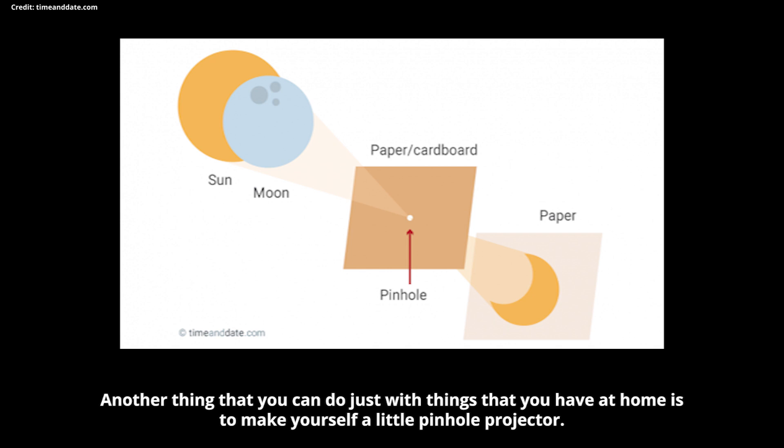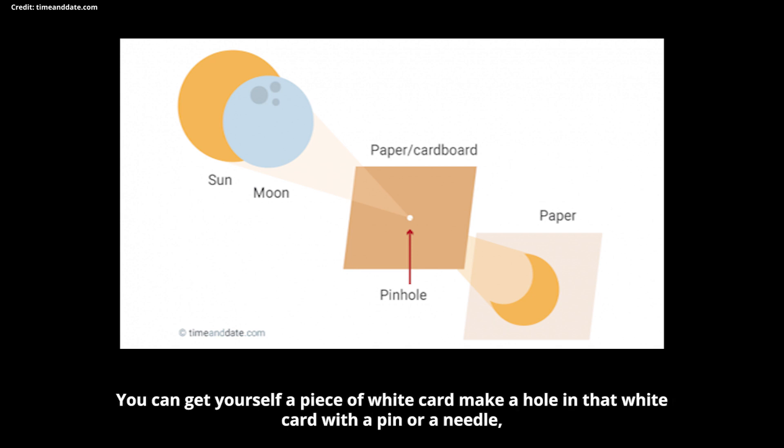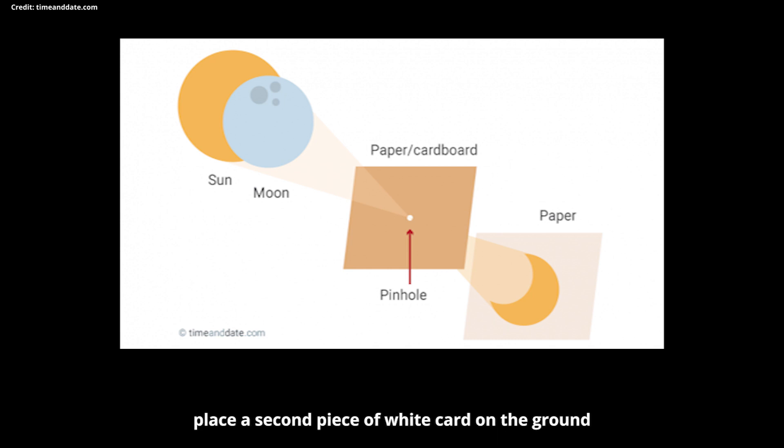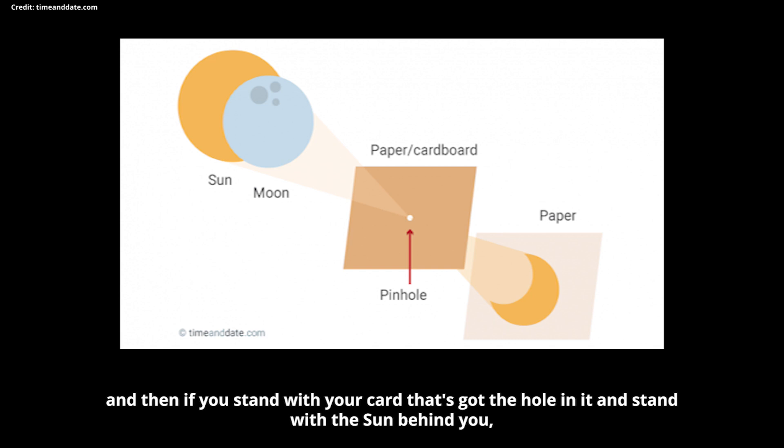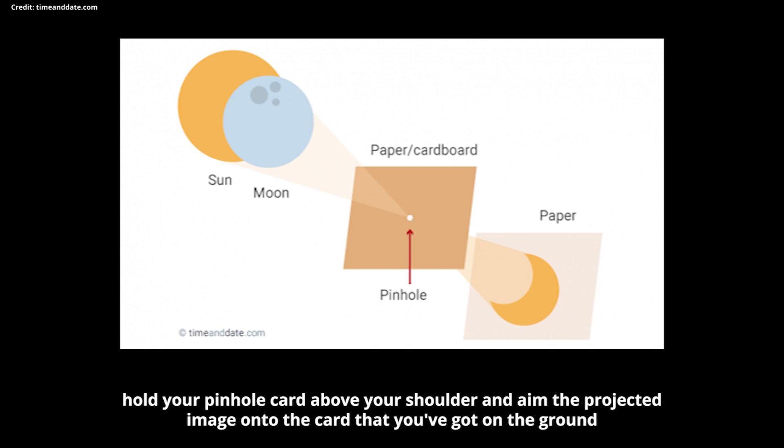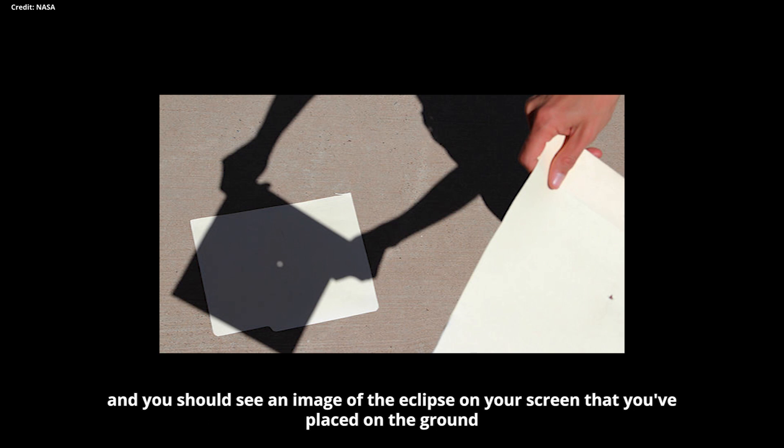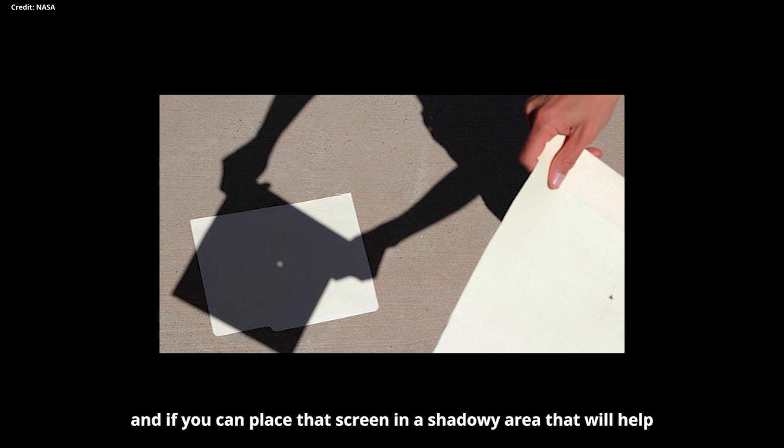Another thing that you can do just with things that you have at home is to make yourself a little pinhole projector. So you can get yourself a piece of white card, make a hole in that white card with a pin or a needle, place a second piece of white card on the ground. And then if you stand with your card that's got the hole in it, stand with the sun behind you, hold your pinhole card above your shoulder and aim the projected image onto the card that you've got on the ground. And you should see an image of the eclipse on your screen that you've placed on the ground. If you can place that screen in a shadow, in a shadowy area, that will help.